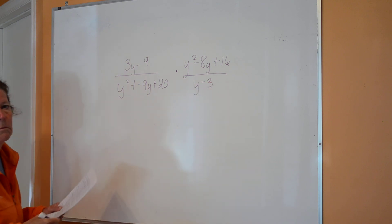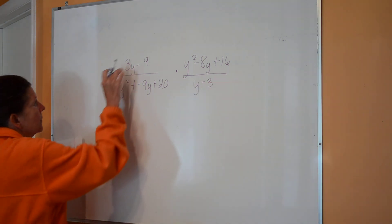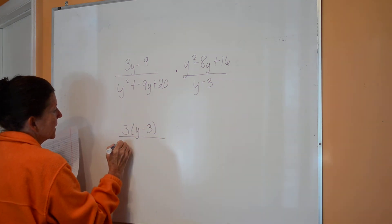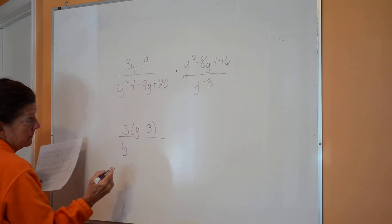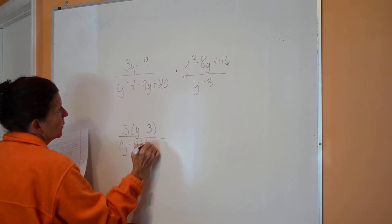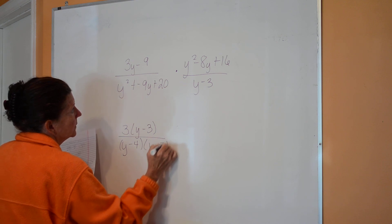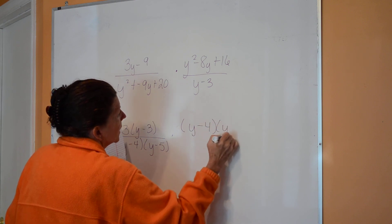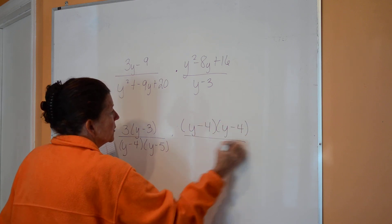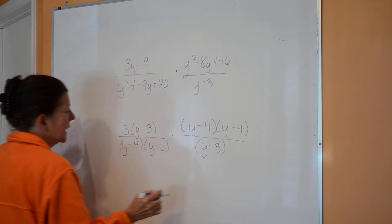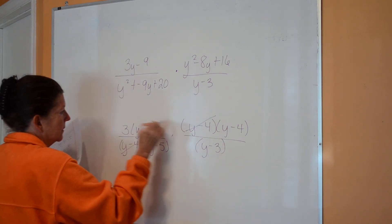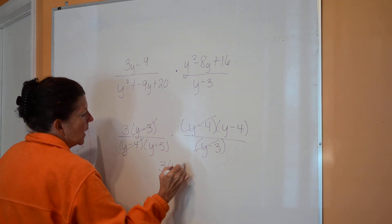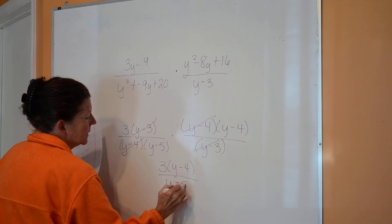Pause the video and try one, then come back. Factor a 3 out of the top, giving 3(y−3). The bottom factors as (y−4)(y−5). The other fraction's top is (y−4)(y−5). Cancel those entire sets, and you're left with 3(y−4) over (y−5).